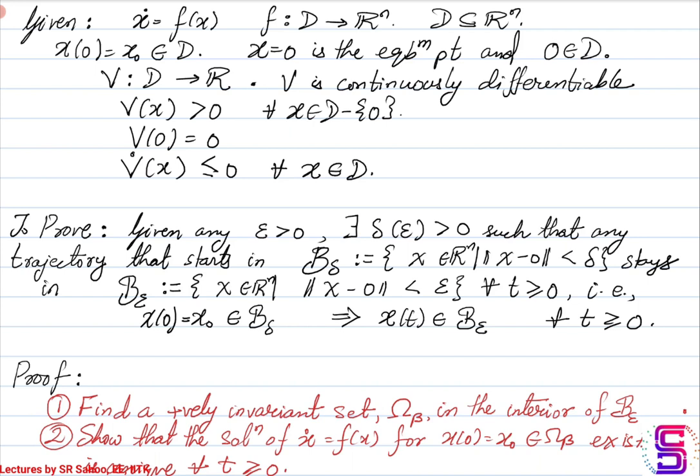From the statement of the theorem, what is given to us is we have a system x-dot equal to f(x) where f is a function that maps points in D to R^n and D is nothing but a subset in R^n. Note that f is a continuous function in D.